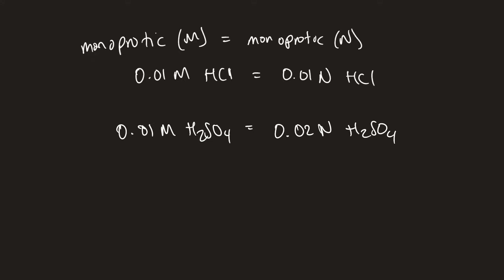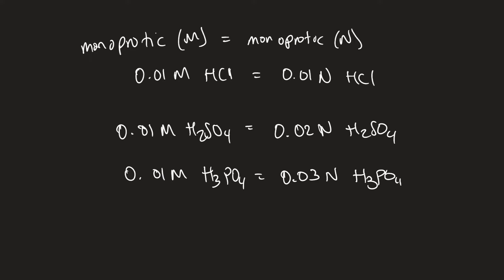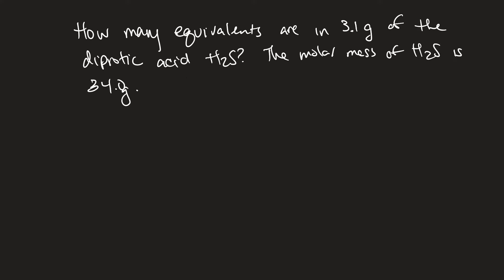That's always the relationship. If you have a triprotic acid — like phosphoric acid — then the normality will be three times the molarity. You have to pay attention to whether an acid is monoprotic, diprotic, or triprotic, especially when converting from molarity to normality.